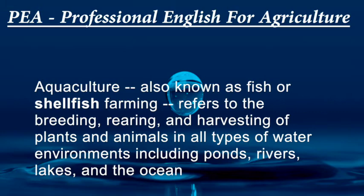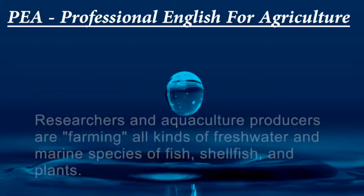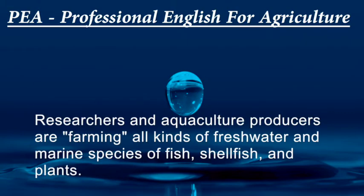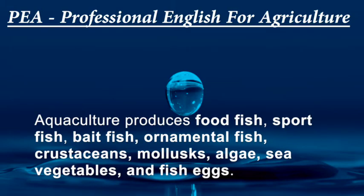These environments include ponds, rivers, lakes, and the ocean. Researchers and aquaculture producers are farming all kinds of freshwater and marine species of fish, shellfish, and plants. Aquaculture produces food fish, sport fish, bait fish, ornamental fish, crustaceans, mollusks, algae, sea vegetables, and fish eggs.